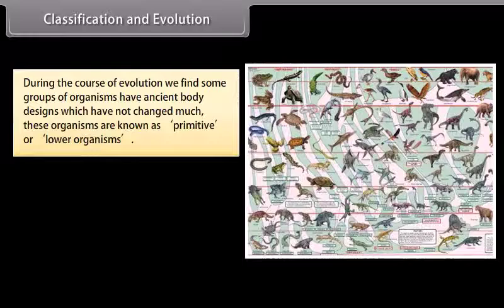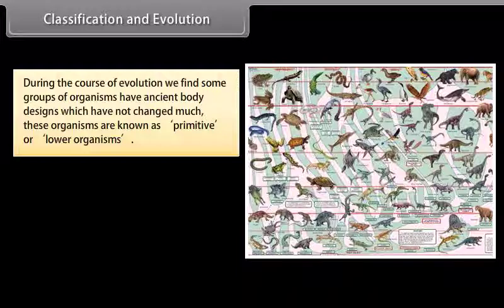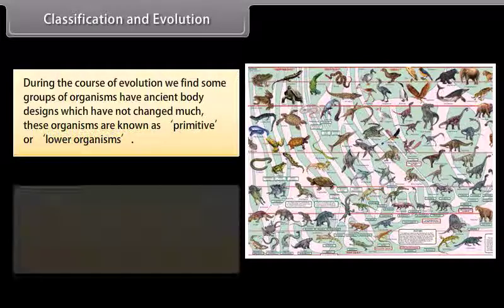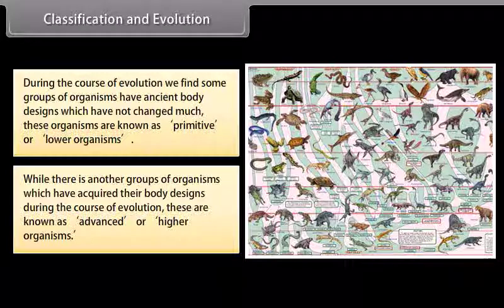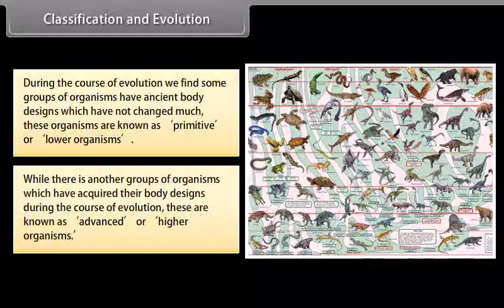During the course of evolution, we find some groups of organisms have ancient body designs which have not changed much. These organisms are known as primitive or lower organisms. While there is another group of organisms which have acquired their body designs during the course of evolution — these are known as advanced or higher organisms.